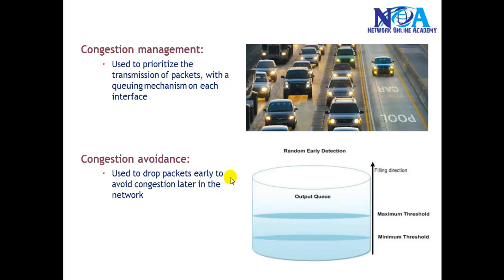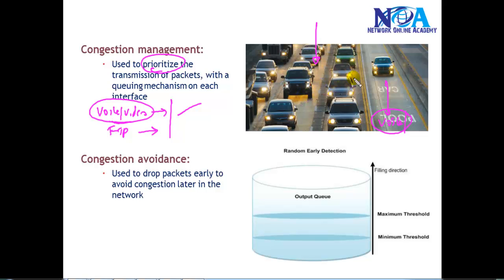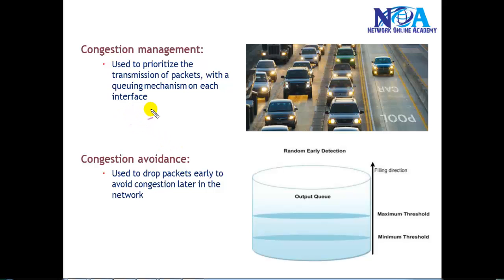The next mechanism is congestion management. In congestion management, we define a priority for specific traffic types. For example, if voice, video, and FTP traffic are all arriving simultaneously during major congestion, we ensure that voice and video traffic is always sent first before FTP traffic. We can arrange them in separate queues to ensure voice and video always get high priority with very little chance of being dropped. Different queuing mechanisms are available, such as class-based weighted fair queuing and low latency queuing.